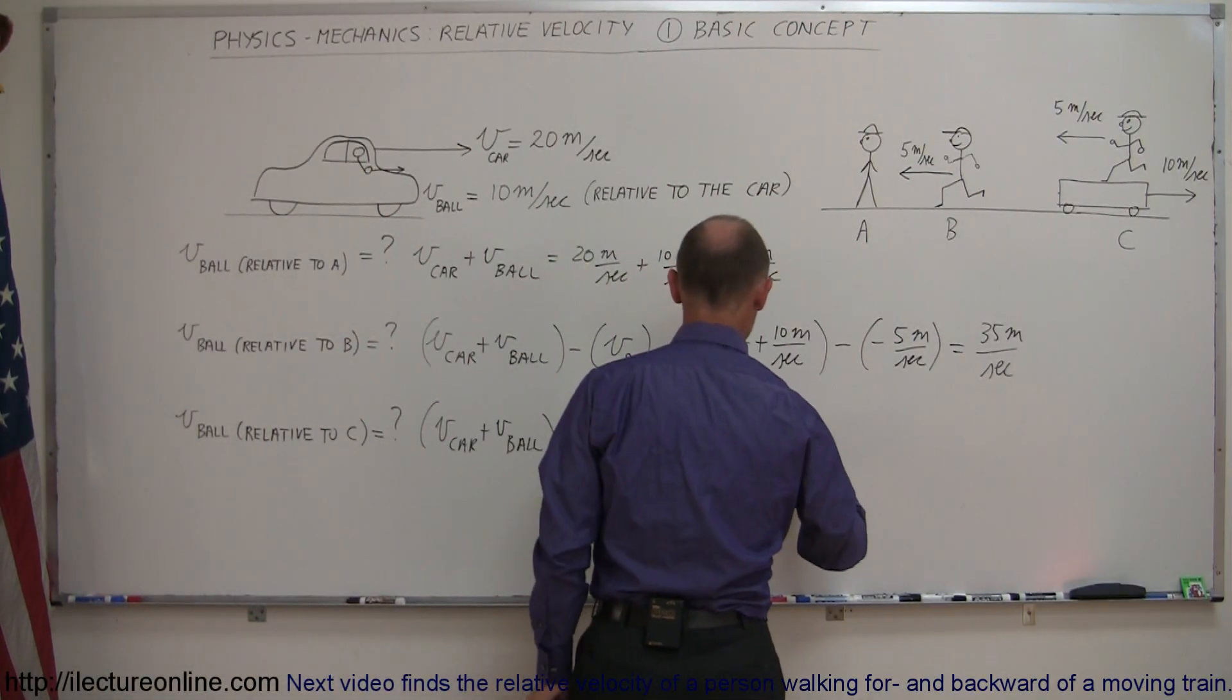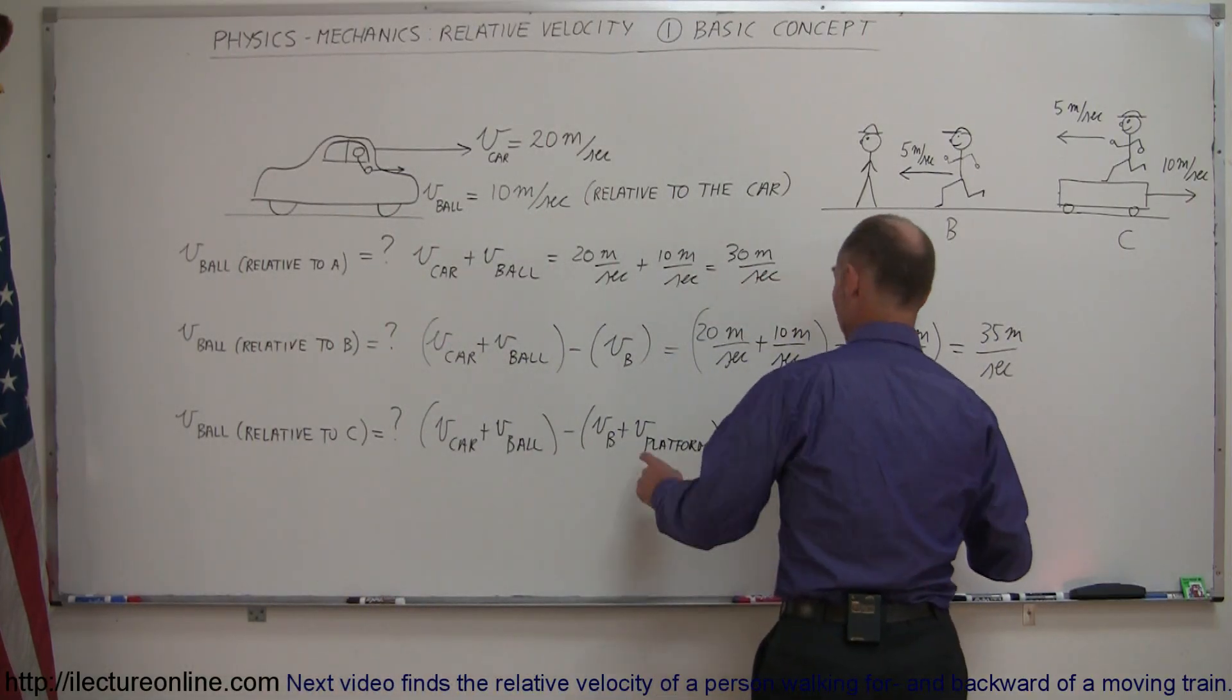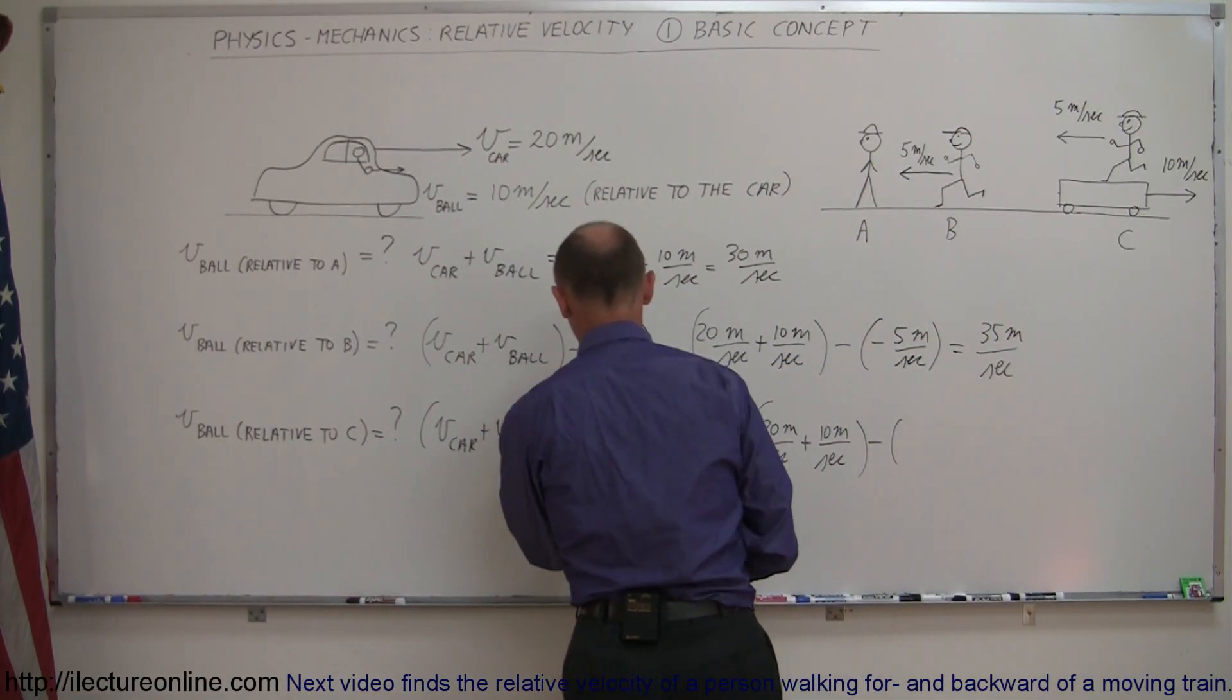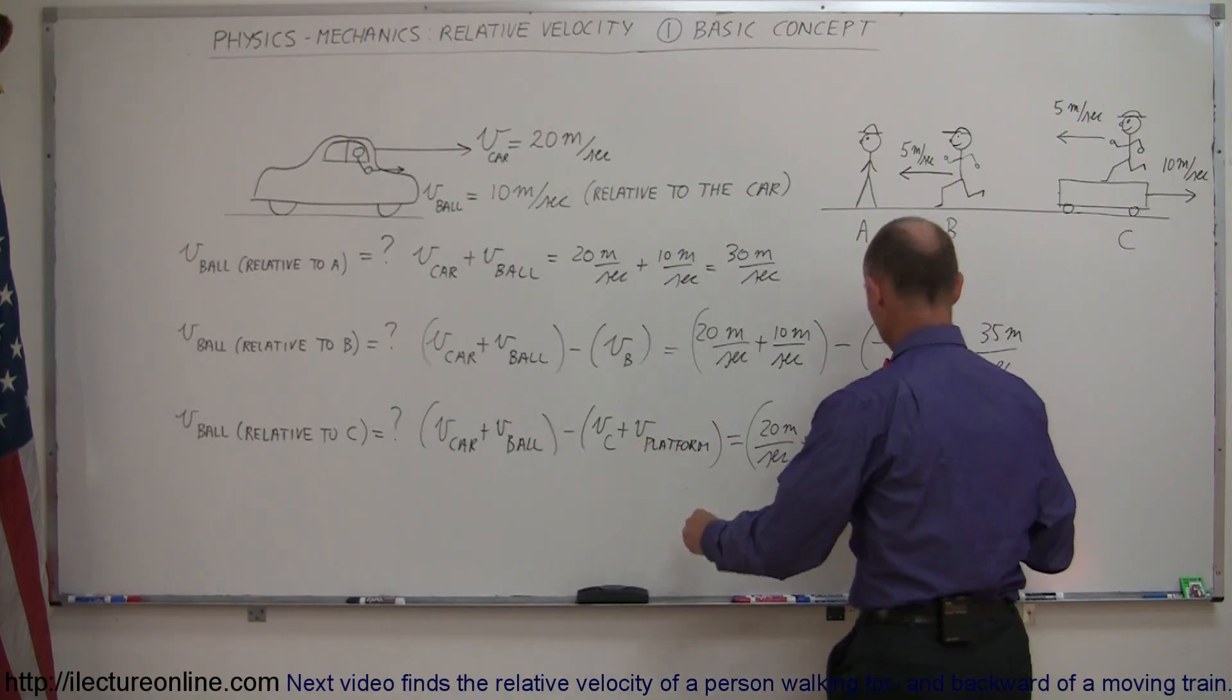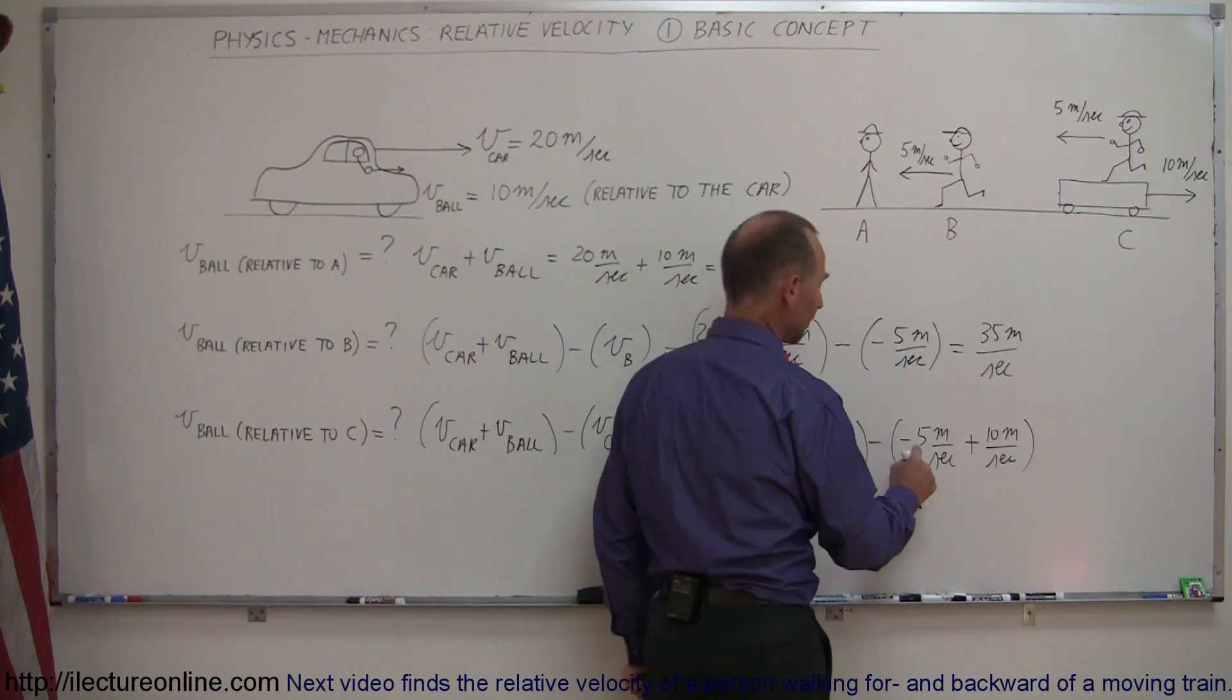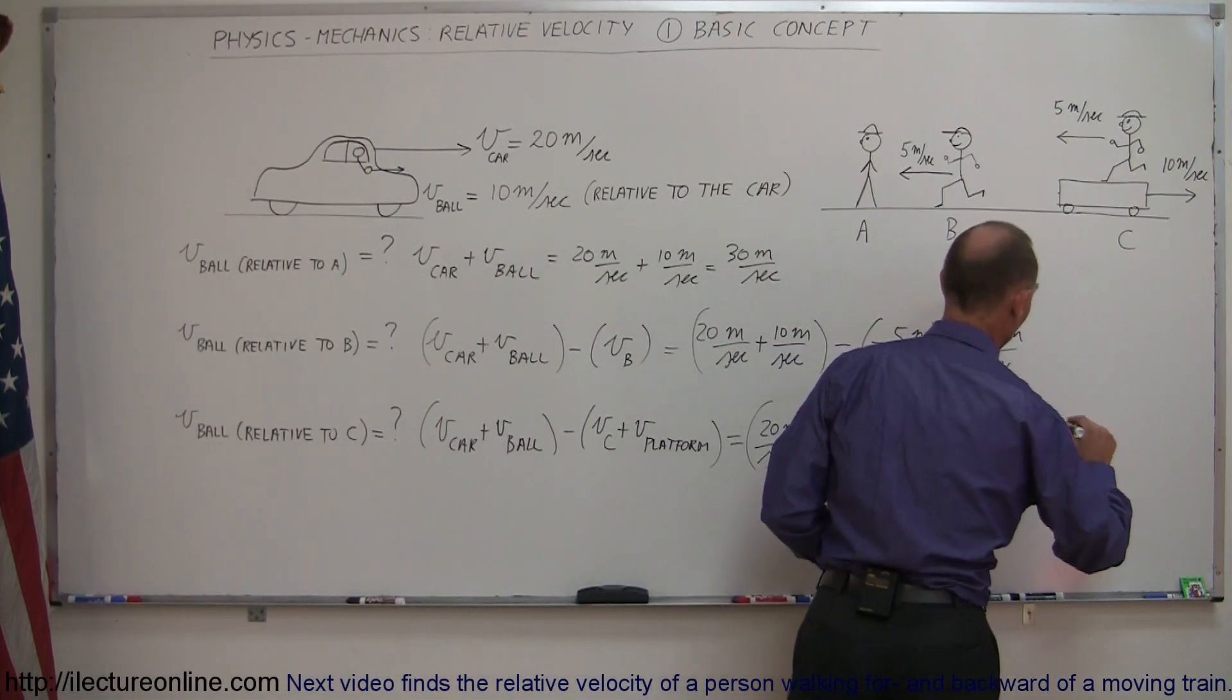So this will be 20 meters per second plus 10 meters per second, again, that would be the velocity of the ball relative to the road. Now we subtract from that velocity of Observer C, not B, because now we're working with a different observer, Observer C, so that would be a minus 5 meters per second, because it's running to the left, and then plus 10 meters per second for the platform. Now you can see that minus 5 plus 10 is a positive 5. We subtract the positive 5 from this, so we end up with 25 meters per second.